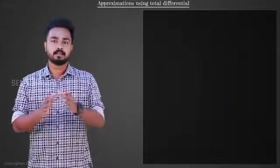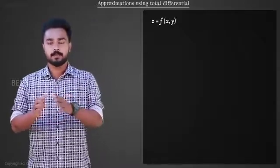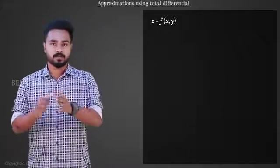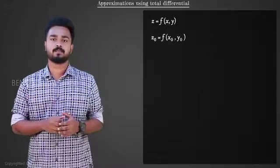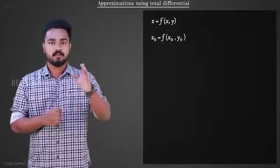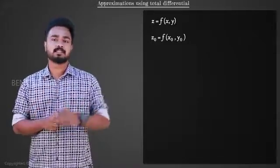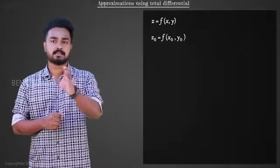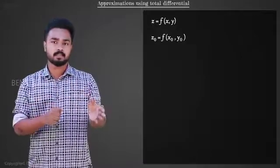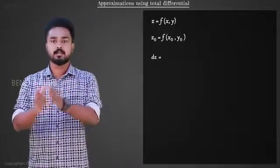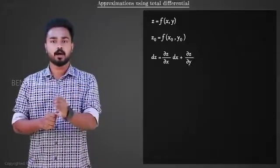Let's take this to a two variable function z is equal to f(x, y). At a particular point x0, y0, our function will have a value z0 is equal to f(x0, y0). Now when we move away from the point x0, y0, the value of the function changes. If the change in x is dx and the change in y is dy, the corresponding change in z can be given by the total differential dz is equal to ∂z/∂x into dx plus ∂z/∂y into dy.